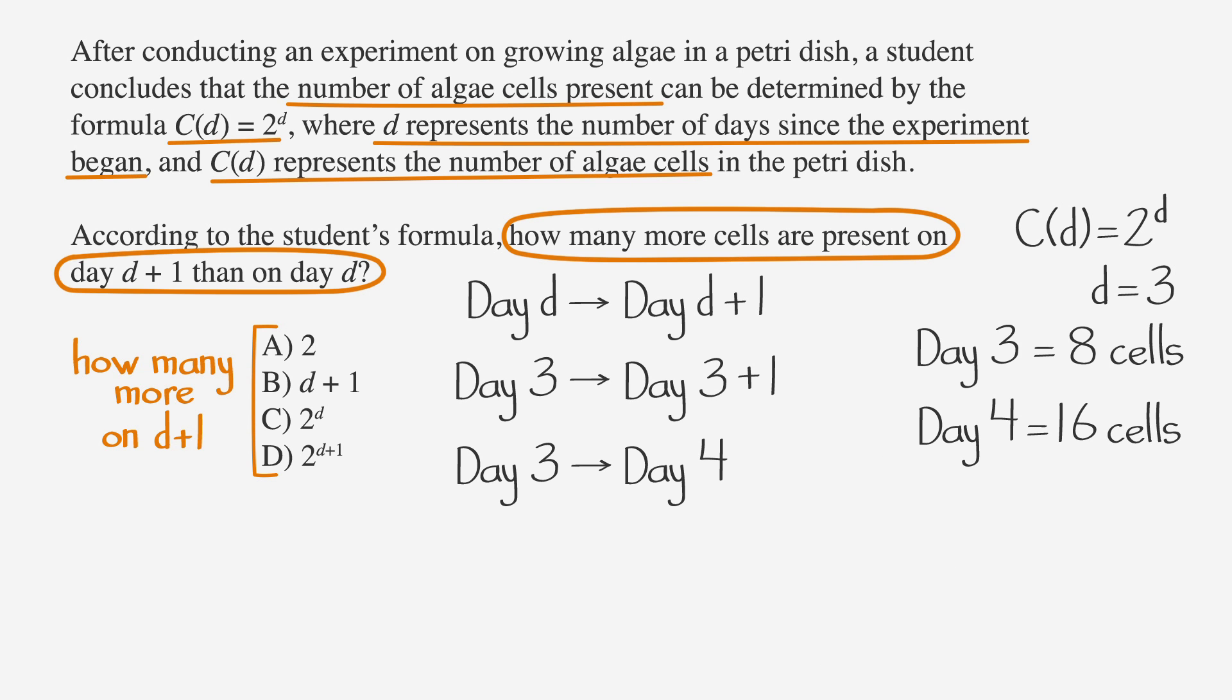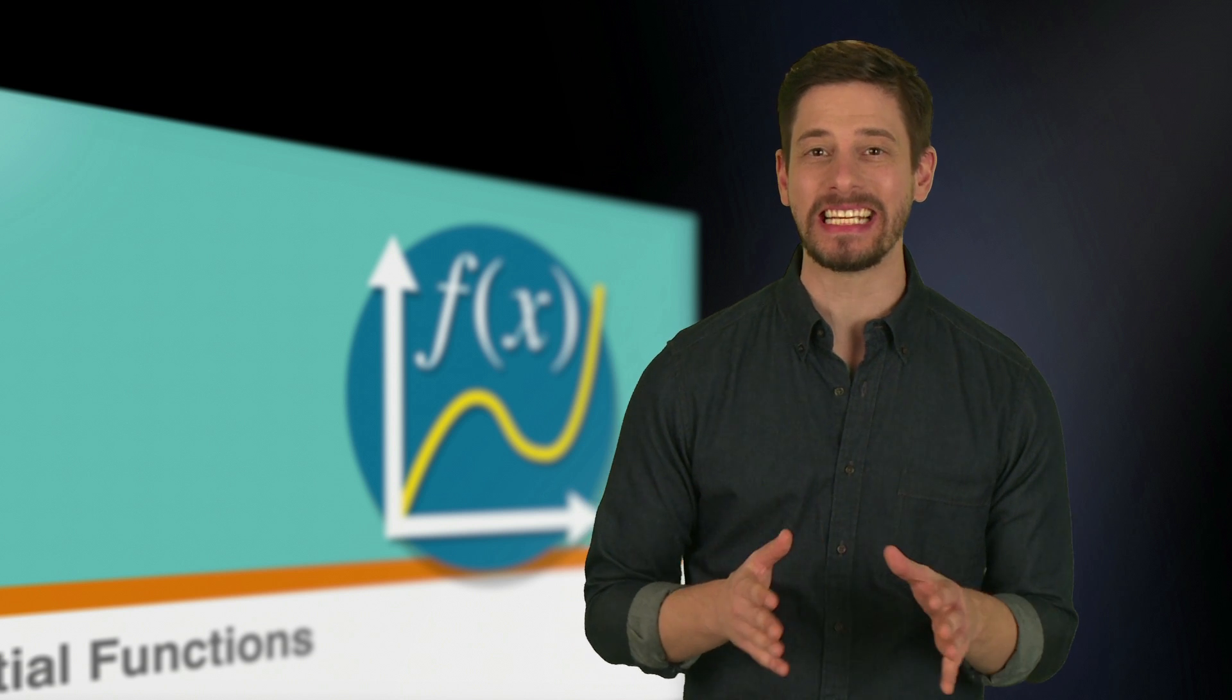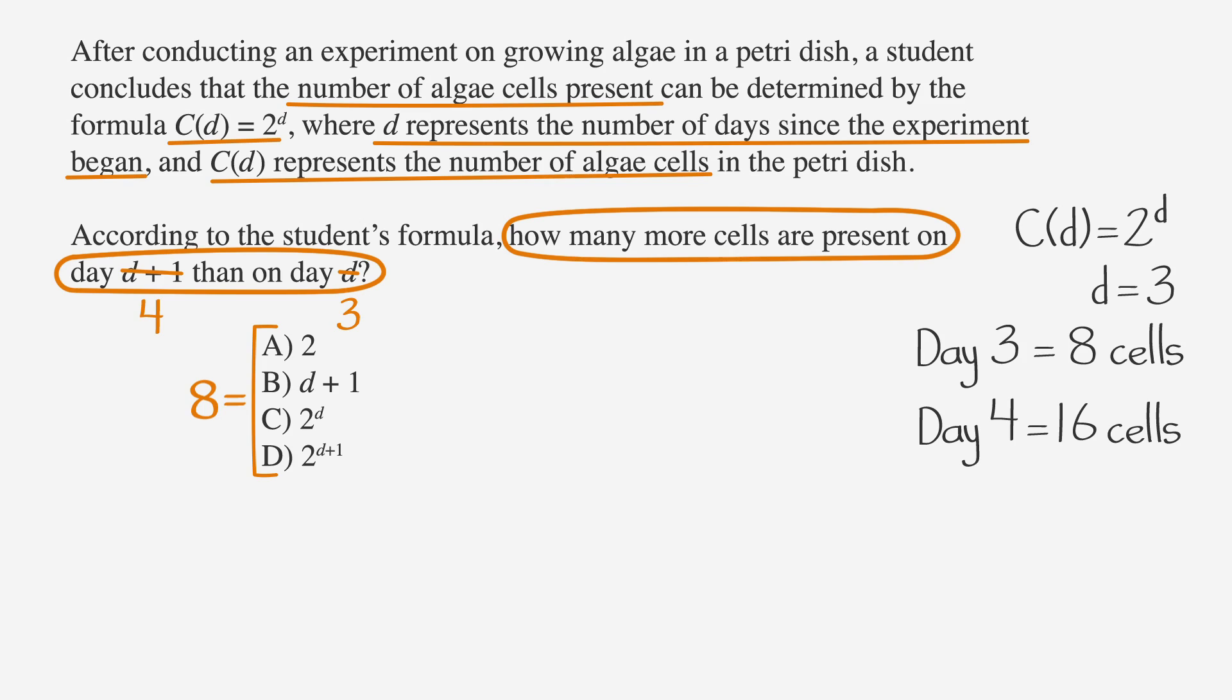Okay, we did the work. We know there were 8 cells on day 3 and 16 cells on day 4. We want to find out how many more cells were present on day 4 than on day 3. That's easy. 16 minus 8, which is 8. So we know the correct answer has to equal 8 when we plug in d = 3. Let's go to the answer choices. Right off the bat, we know 2 isn't equal to 8, so let's cross off answer choice A. Answer choice B becomes 3+1, that equals 4, not 8. So cross off answer choice B. Only 2 options left. Let's take a look at C. 2^d becomes 2^3, and that equals 8. And that's exactly what we're looking for. But before we pick C, let's quickly look at D. 2^(d+1) becomes 2^(3+1), or 2^4. That equals 16, not 8. So answer choice C is clearly correct.